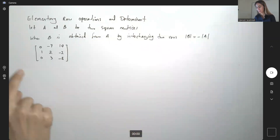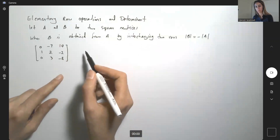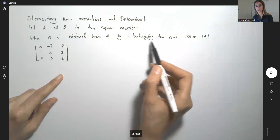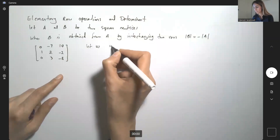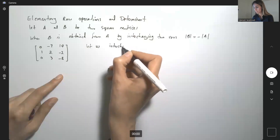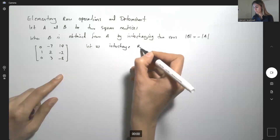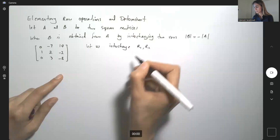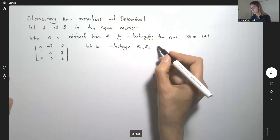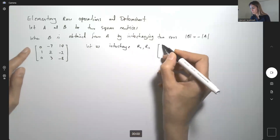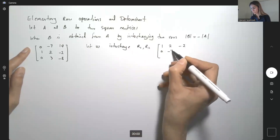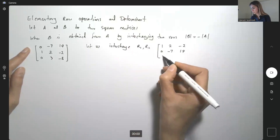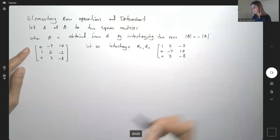Here I have this 3×3 matrix and I'm going to apply one row operation: interchanging two rows. Let us interchange row 1 and row 2. So the new matrix becomes: row 1 is 1, 2, -2; row 2 is 0, -7, 14; row 3 is 0, 3, -8.